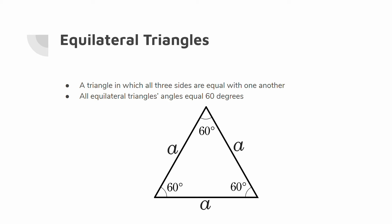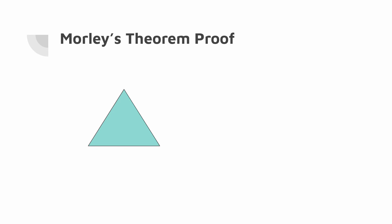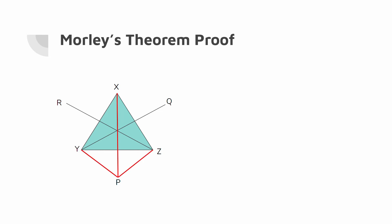We may now go into Morley's theorem proof. Let there be a triangle DEF with angles 3 alpha, 3 beta, and 3 gamma, which add up to 180 degrees. Through simple algebra, when these angles are trisected, alpha plus beta plus gamma equals 60 degrees. Since Brian Stonebridge's proof works backwards, let us begin with an equilateral triangle XYZ. Points P, Q, and R are on the altitudes of triangle XYZ. Let us focus on XP. Draw PZ and PY, creating isosceles triangle YPZ. Let angle XPY equal angle XPZ equal alpha plus 30 degrees.